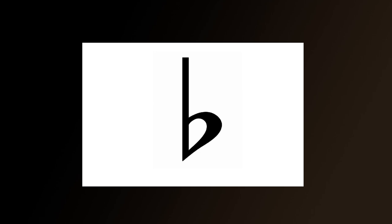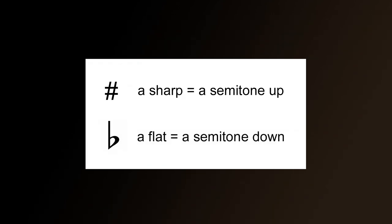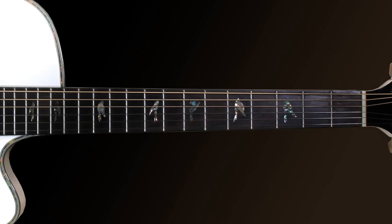A sharp is a semitone up and a flat is a semitone down. On a guitar, a semitone is a single fret, so a sharp would be one fret up and a flat would be one fret down. So let's illustrate this on a guitar to make it perfectly clear. We'll start with the sharp. The first thing we need to do is define what is up and what is down on a guitar.